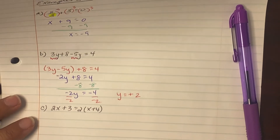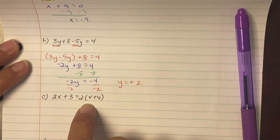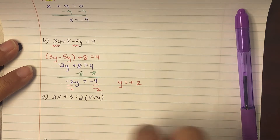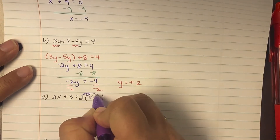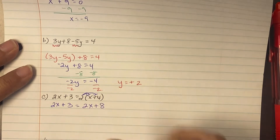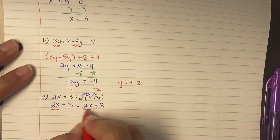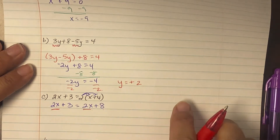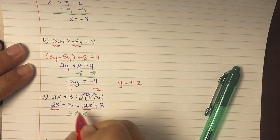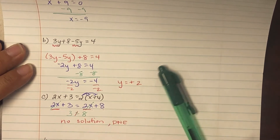On example C it says two x plus three equals two times the quantity x plus four. The left side is already expanded; the right side needs to be distributed. Distributing the two gives two x plus three equaling two x plus eight. Both sides have two x, so they cancel, leaving three equaling eight — which is not possible. This is a no solution problem; you can write 'no solution,' 'DNE' (does not exist), an empty set, or a zero with a line through it.